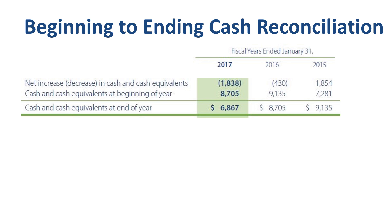Once you have the three main sections — operating, investing, and financing — there is an important closing step: ensuring that the net increase or decrease in cash and cash equivalents, plus the opening cash balance, equals the ending cash balance. If you're studying for an exam or preparing cash flow statements in real life, make sure you include this finishing touch.